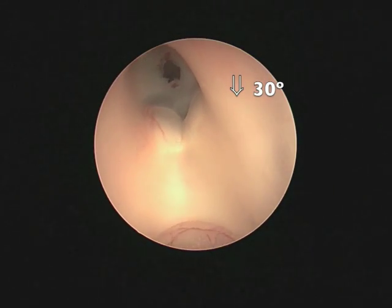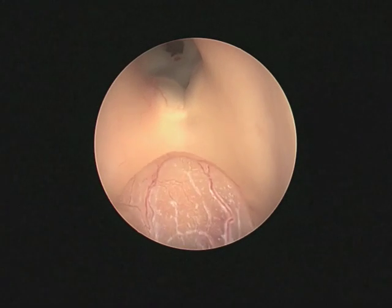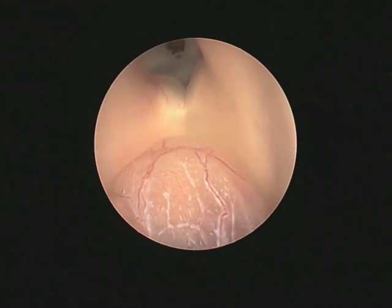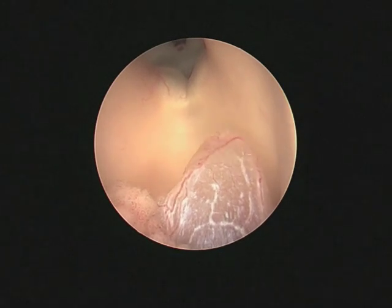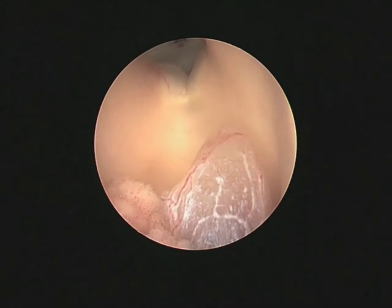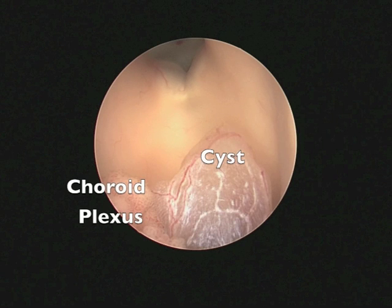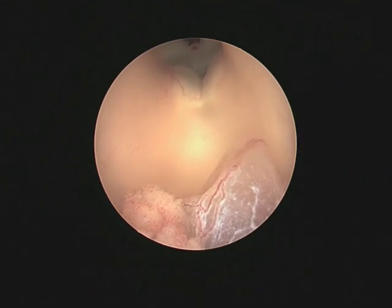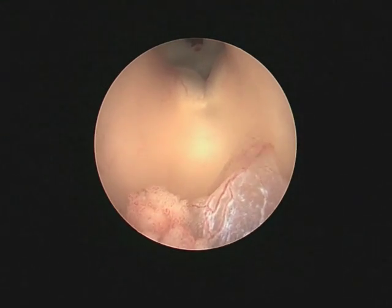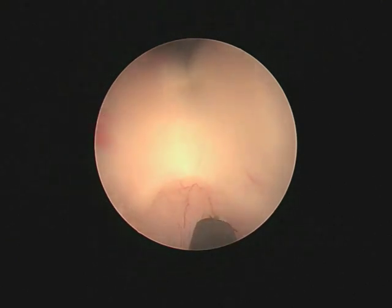Using a 30-degree endoscope pointing posteriorly, we were able to identify the choroid cyst located inside the third ventricle, closing the entry area of the aqueduct. The cyst was definitively coming from the choroid plexus, and our decision was to use a bipolar to coagulate and shrink the cyst.